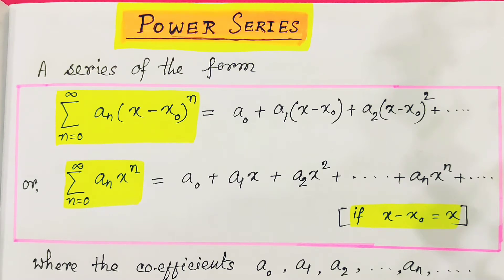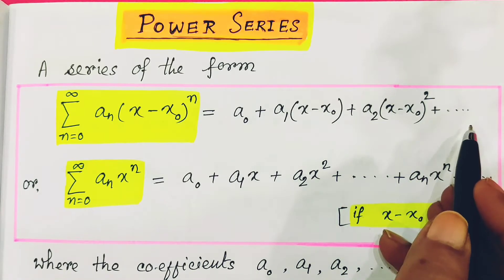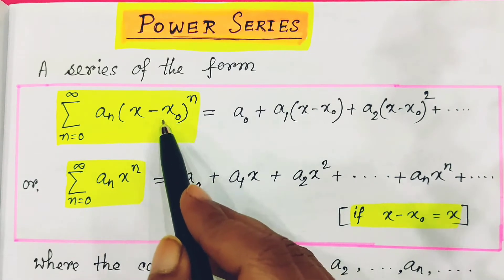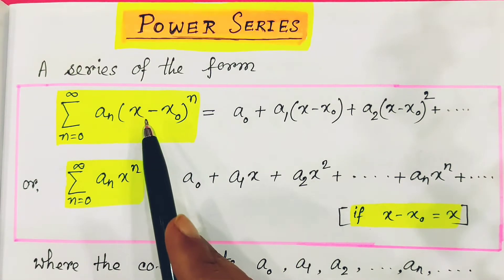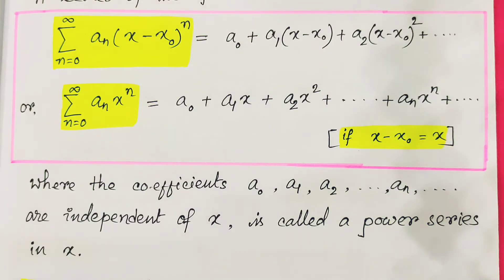First of all, what is a power series? I hope all of you are comfortable with the geometric series — this is a continuation of that. A power series is a series of the form: summation of n from 0 to infinity of a_n times (x minus x_0) to the power n, which equals a_0 plus a_1(x minus x_0) plus a_2(x minus x_0) squared, and so on. Here, a_n is the coefficient and the variable is raised to power n. If we replace (x minus x_0) by x, we get the standard form where coefficients a_0, a_1, a_2, ..., a_n are independent of x — this is called a power series in x.